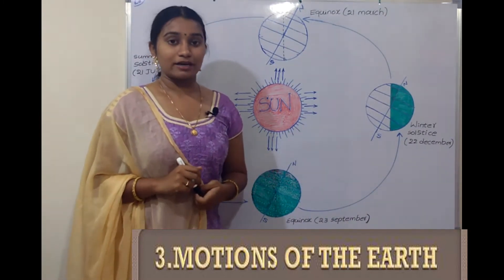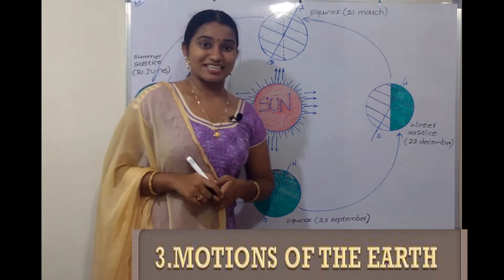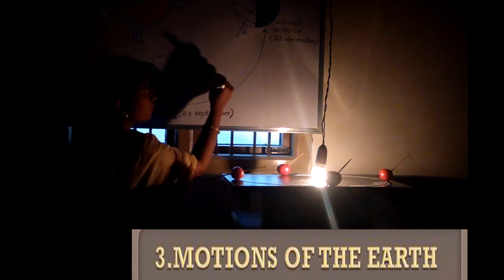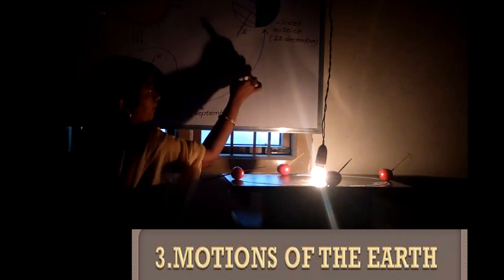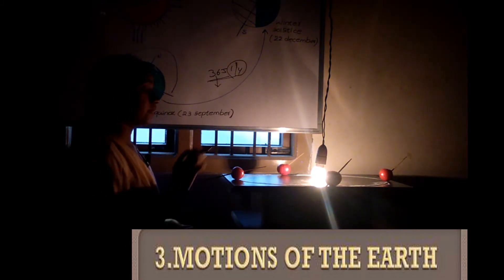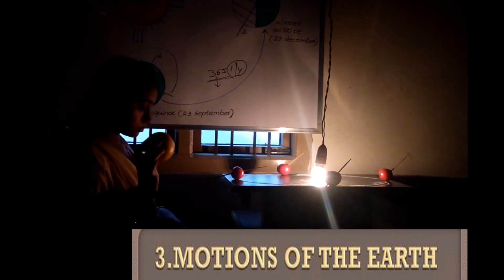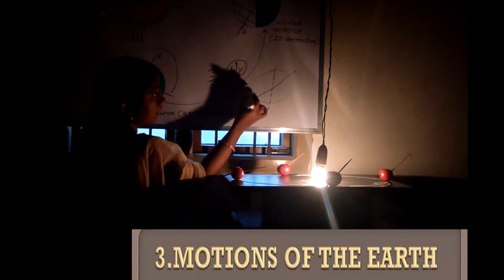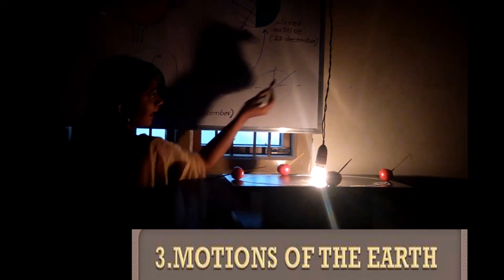So we are showing it to you practically. Now we will see where the sun should revolve. The Earth revolves around the sun in 365 and one-quarter days. This is the orbital line and this is the axis. The axis slope looks towards the north.